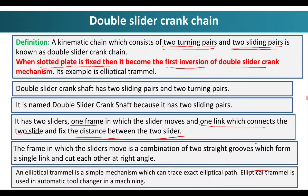The first example is elliptical trammel. It is a simple mechanism which can trace an exact elliptical path. The elliptical trammel is used in automatic tool changers in machining operations — an automatic cutting tool changer that can be controlled or moved with the help of this elliptical trammel.